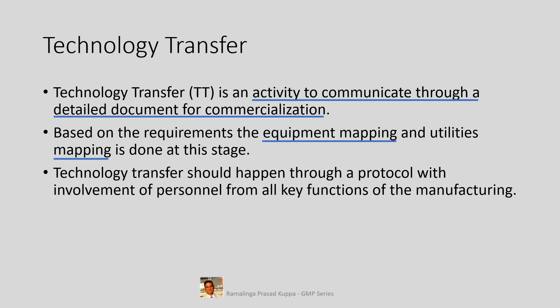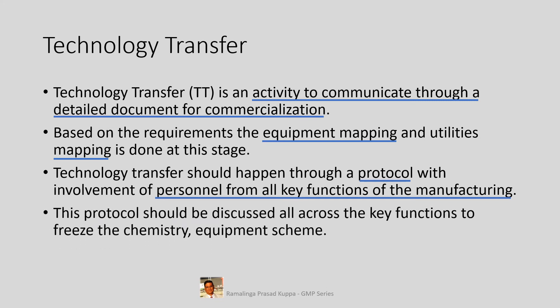Technology transfer should happen through a protocol, with involvement of personnel from all key functions of the manufacturing. Generally the protocol is initiated by R&D with inputs from key functions of manufacturing. The protocol should be discussed across all key functions to freeze the chemistry and equipment scheme. At this stage, clear responsibilities of R&D and other key functions should be known. The protocol should discuss the responsibilities clearly.